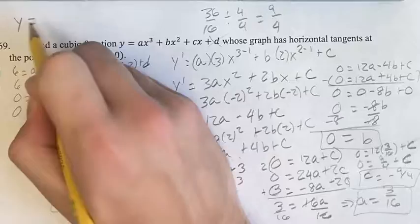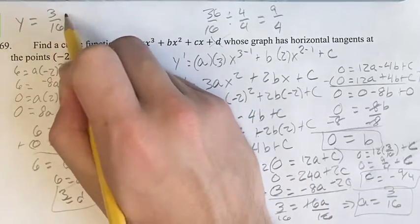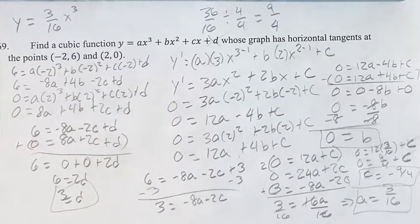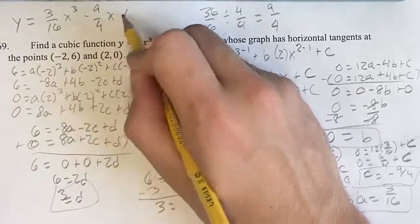So writing out the cubic function, we have y equals ax cubed. It would be 3 sixteenths x cubed. Plus bx squared would be plus 0x squared, so just plus 0, so you can ignore it. Plus cx would be minus 9 fourths x. Plus d is plus 3.